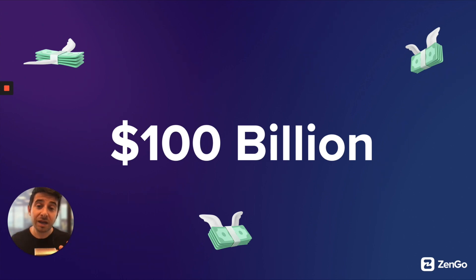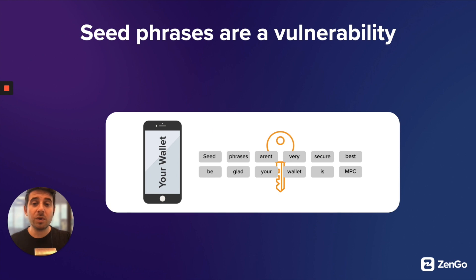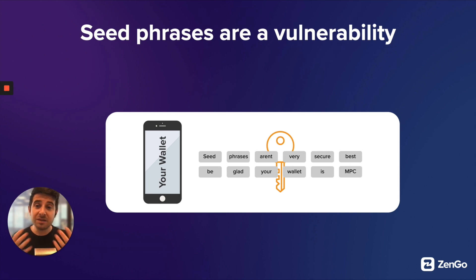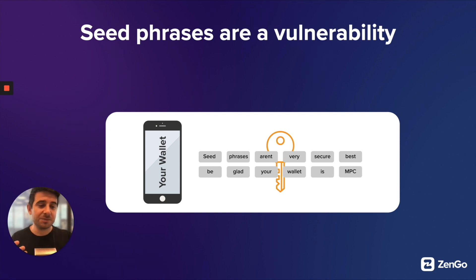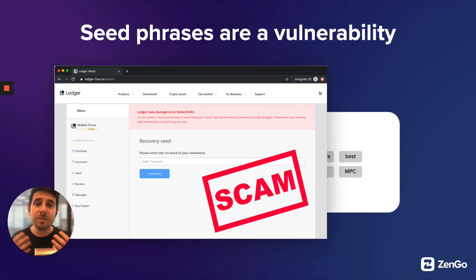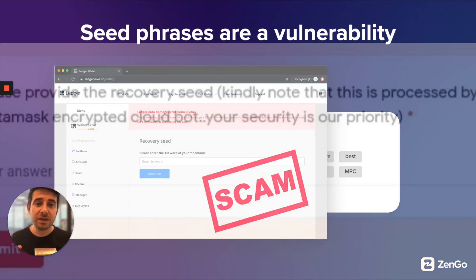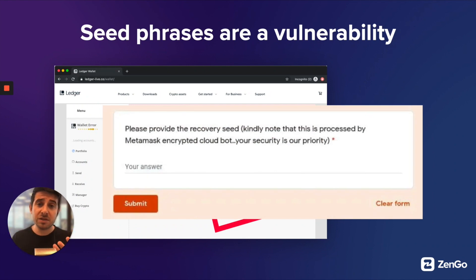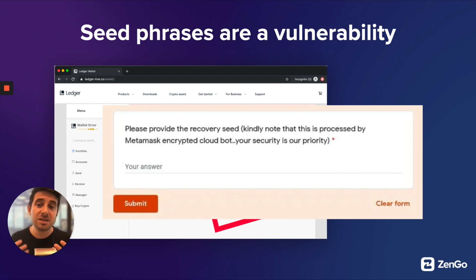So why has so much been lost already? It's because seed phrases are a vulnerability — they represent a single point of failure. In a traditional wallet, whether software or hardware, it doesn't matter how secure that wallet is if you can't secure the seed phrase. People say to keep it somewhere safe, but what does that even mean? We see on a daily basis lots of scams pop up across the ecosystem. While you might know not to put your seed phrase online, many people don't. So these scams keep working. This is a system that is not secure by default.